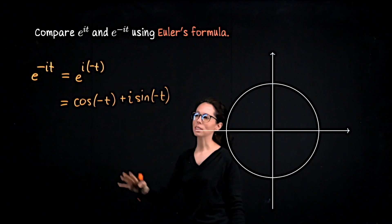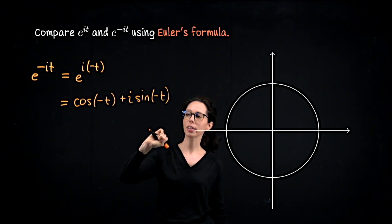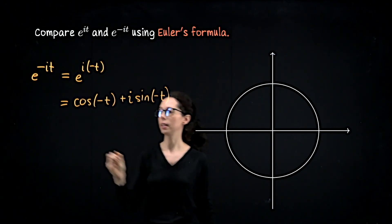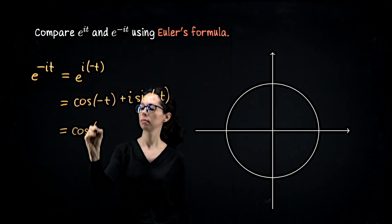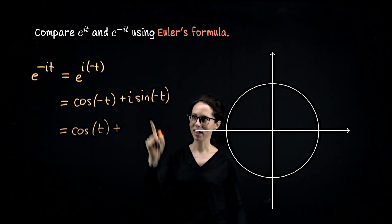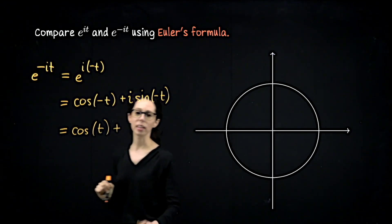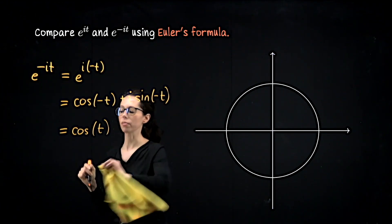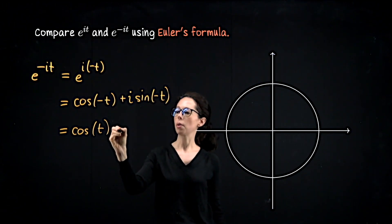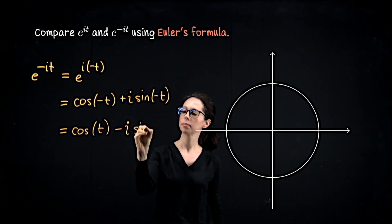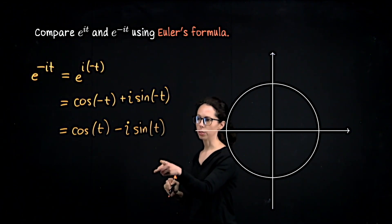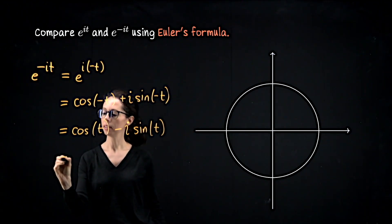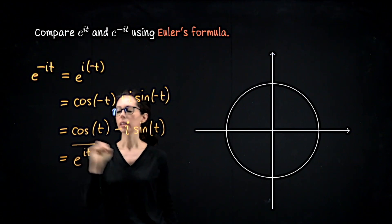We can take this further because cosine is an even function — it has all even powers in its Taylor series — so cosine of negative t equals cosine of t. On the other hand, sine is an odd function with all odd powers, so sine of negative t gives us negative sine of t. Therefore e to the negative it equals cosine of t minus i sine of t, which is the complex conjugate of e to the it.